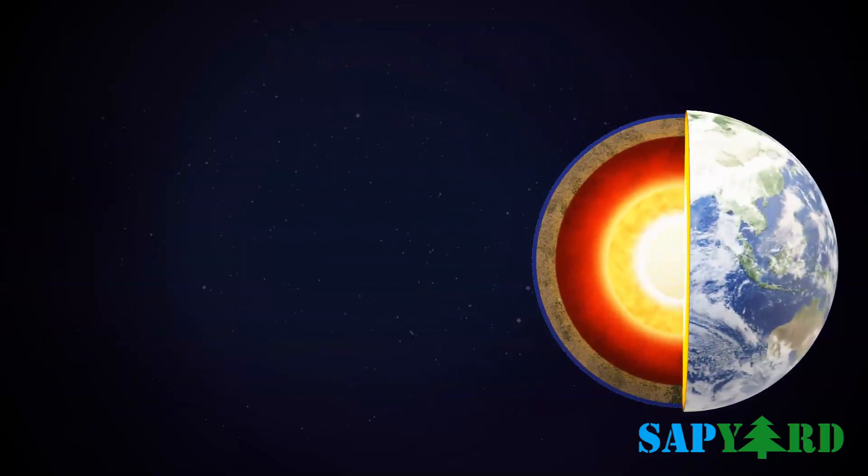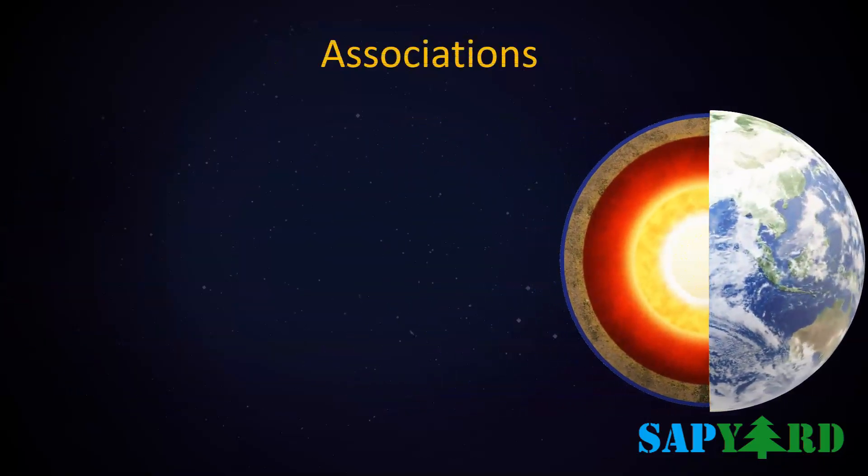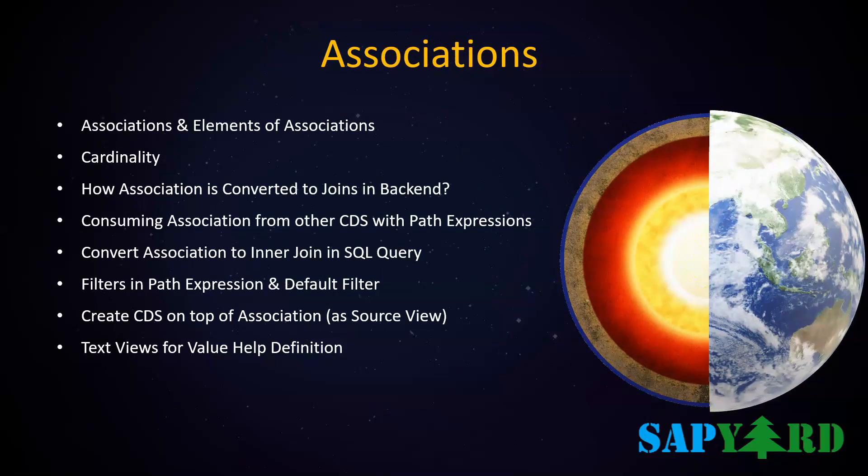Associations are used to express relationships between different CDS views and resemble joins, but they are no regular joins. Associations are easier to read because they don't directly program the joins. Just remember one term: associations are joins on demand. The trainer will clarify in detail with real-time exercises and hands-on examples.